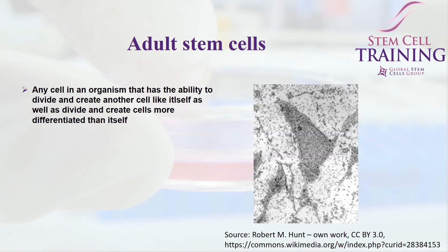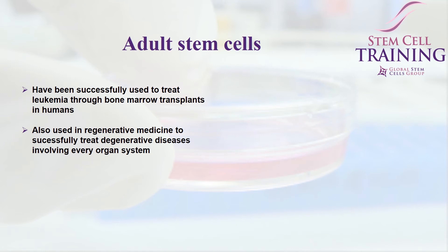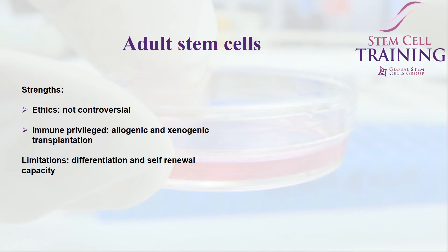Adult stem cells can be collected from an adult, or from tissues such as cord blood or the placenta. They have the ability to divide and make copies of themselves, as well as create differentiated types of cells or tissue. Adult cells have been successfully used to treat leukemia through bone marrow transplants in humans since the 60s, and more recently have been used in regenerative medicine to successfully treat degenerative diseases involving almost every organ system. We are currently developing a variety of different therapies utilizing adult stem cells. One strength associated with adult stem cells is that there is no controversy or ethical concerns, as they are not derived from an unborn embryo.